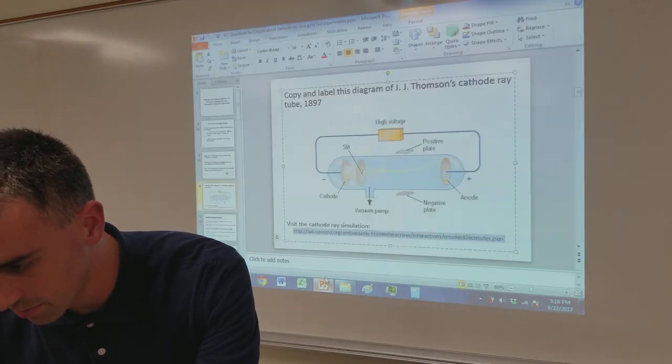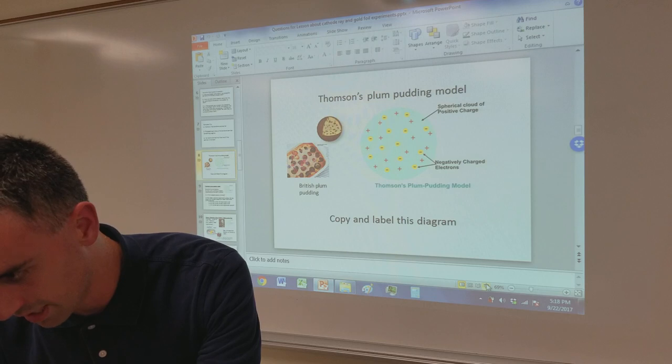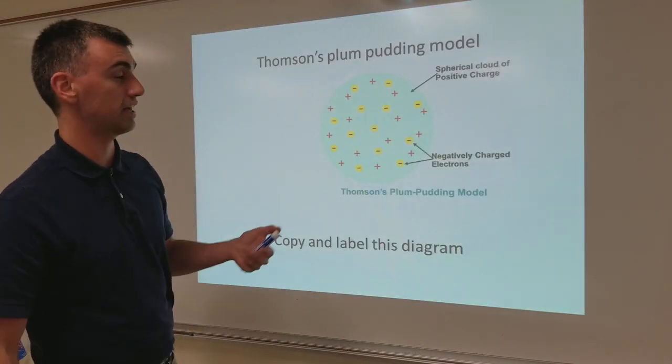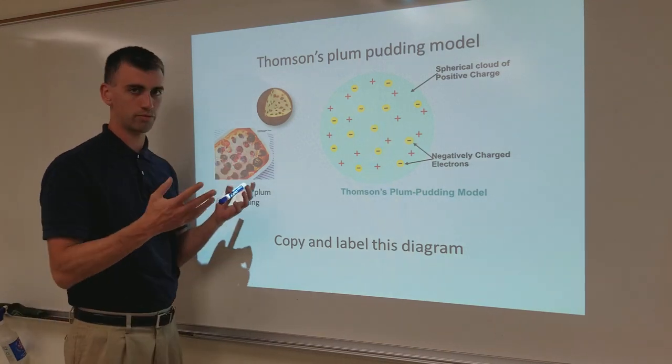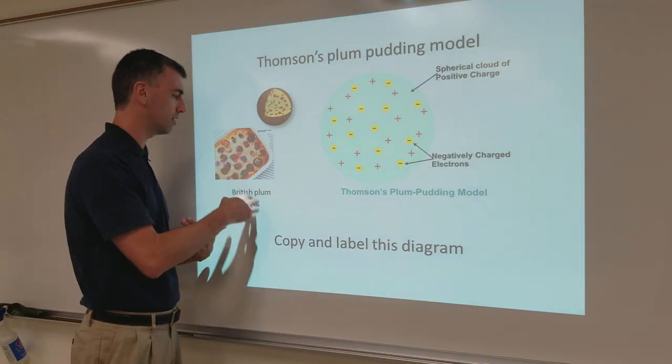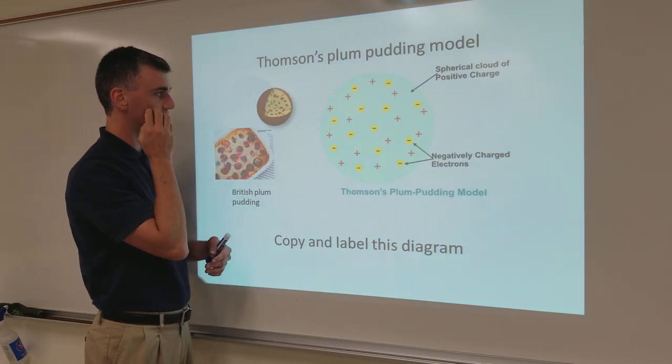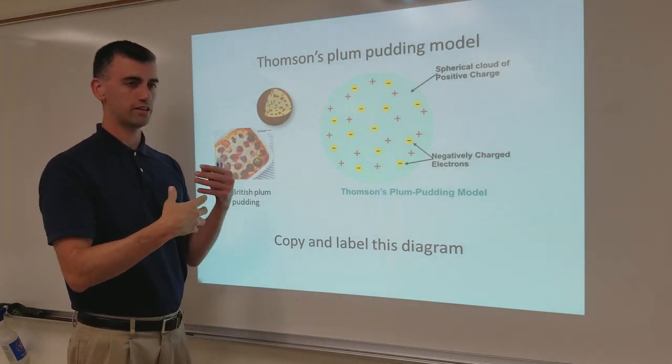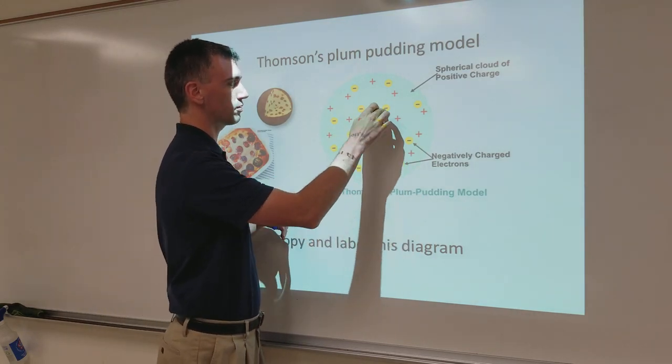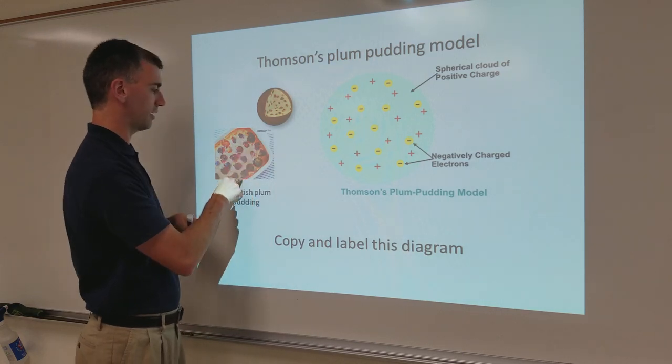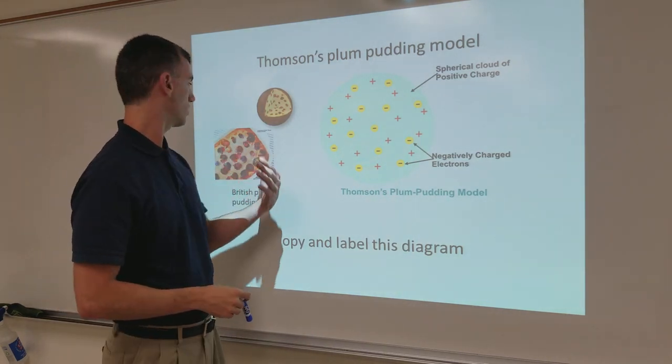And that's where, as we bring up a picture of it, his plum pudding model came into account. So named after the British dessert, where you have pudding, we Americans would call it bread, and plums spread out inside of it. And the idea was, okay, he said, clearly there's this negative stuff. I'm going to say there's negatively charged stuff spread around the inside of an atom like the plums and pudding.